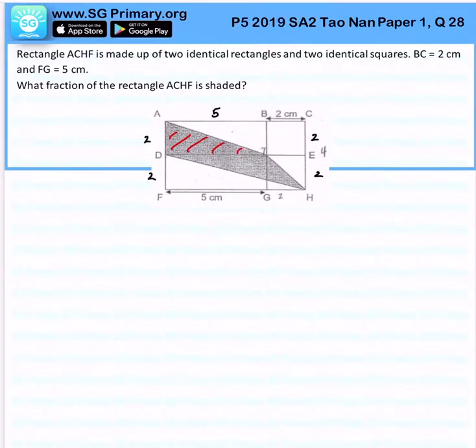This would be half times 2 times 5 and that will give us 5cm².